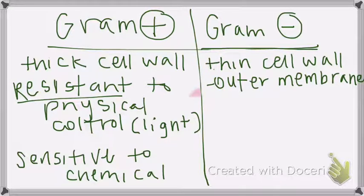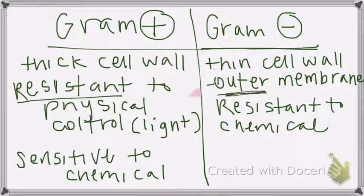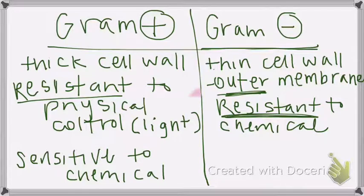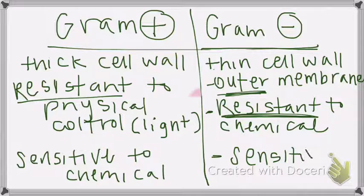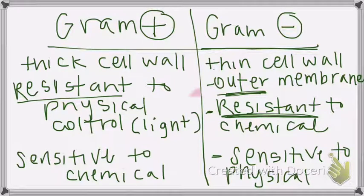Opposite. Gram negative is resistant to chemicals. Think about it like they have that outer membrane, that fatty membrane. Remember lipoprotein, lipopolysaccharide fatty layer. Phospholipid, so fat, fat, fat layer. So they are resistant to chemicals breaking through them. But because of their thin cell wall, they are sensitive to physical control. Okay, good.